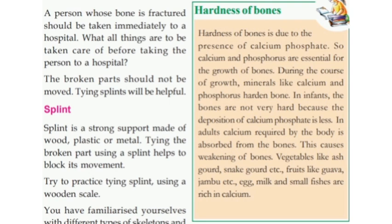This causes weakening of bones. Vegetables like ash gourd and snake gourd, fruits like guava and jambu, along with eggs, milk, and small fishes are rich in calcium.